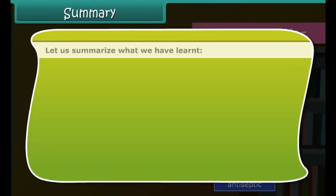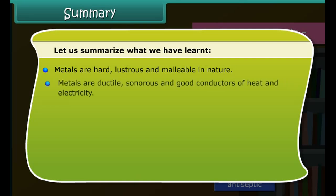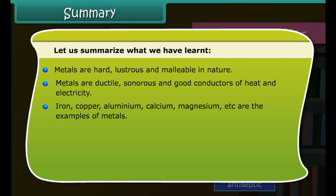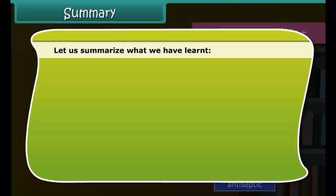Summary: Metals are hard, lustrous, and malleable in nature. Metals are ductile, sonorous, and good conductors of heat and electricity. Iron, copper, aluminium, calcium, and magnesium are examples of metals. Non-metals are soft, dull, and non-ductile in nature. Non-metals are non-sonorous, non-malleable, and poor conductors of heat and electricity. Sulfur, carbon, oxygen, and phosphorus are examples of non-metals.